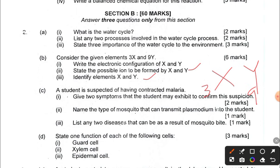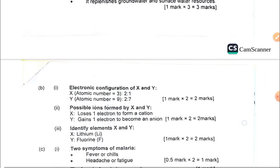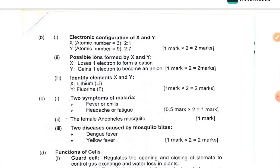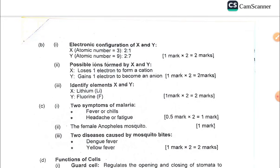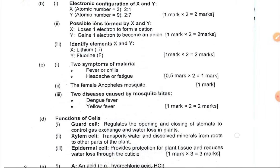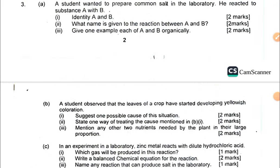Question 2d has to do with specialized cells in living things — specifically in plants, including guard cells and epidermal cells. So question 2 covers the water cycle, atomic numbers and electron configuration, malaria, and specialized cells in plants.